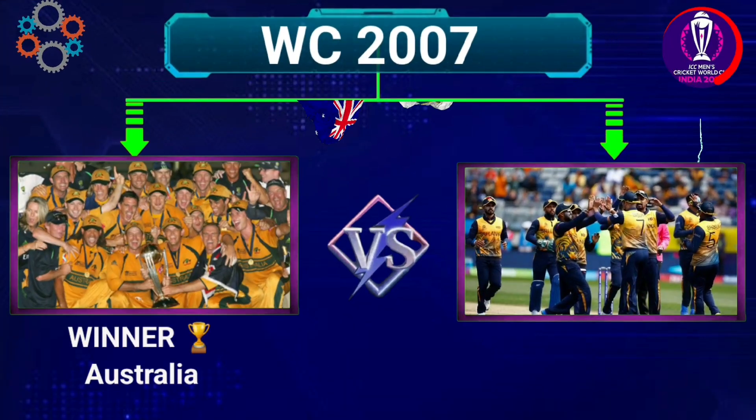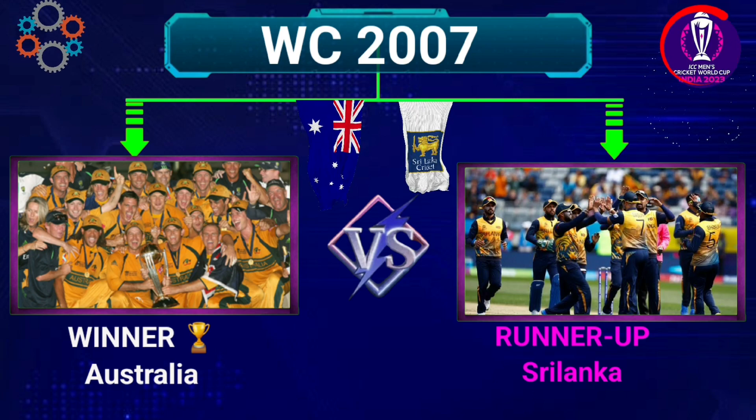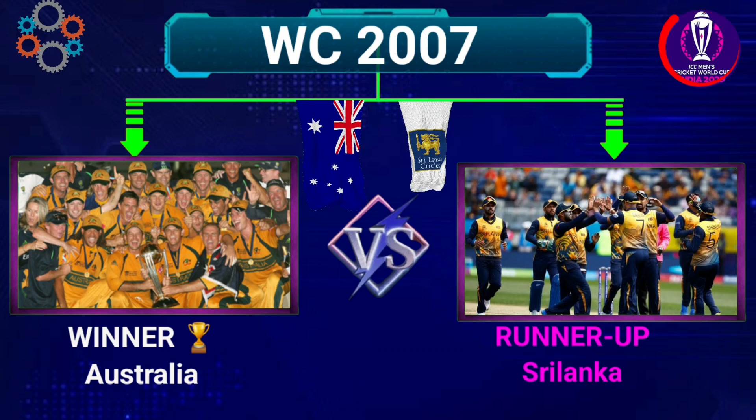Number 9: World Cup 2007, Winner Australia, Runners-up Sri Lanka.